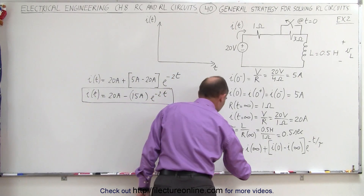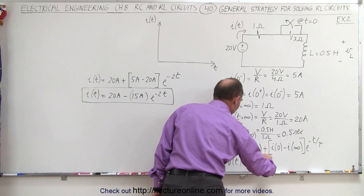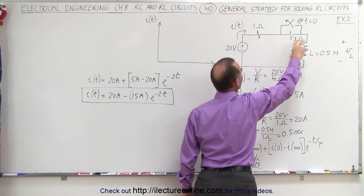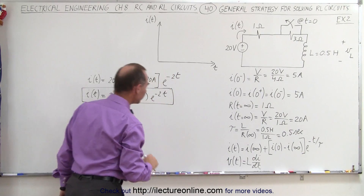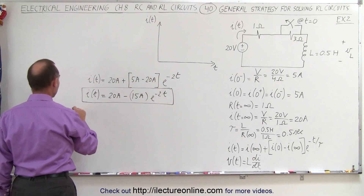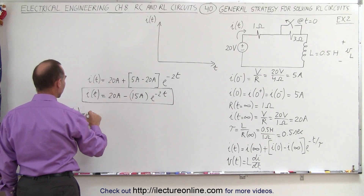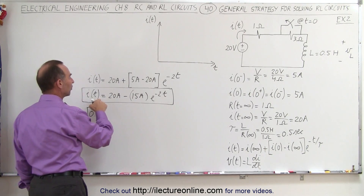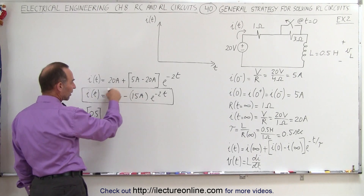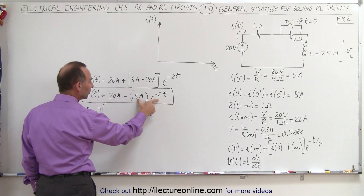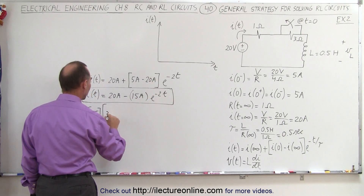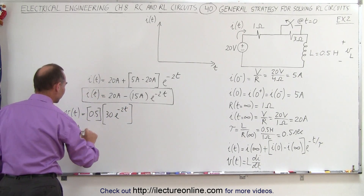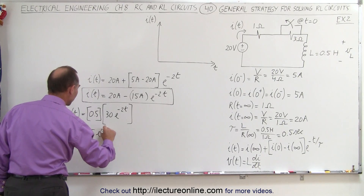We also know that the voltage across the inductor equals the inductance times the change in current over time. Notice the voltage will be directed in the opposite direction as the voltage supply, because it opposes the change in current. The voltage as a function of time equals the inductance of 0.5 multiplied by di/dt. The derivative of the constant goes to 0, and the derivative gives us minus 2 times minus 15, yielding plus 30 times e to the minus 2t. So the voltage as a function of time equals 15 e to the minus 2t.